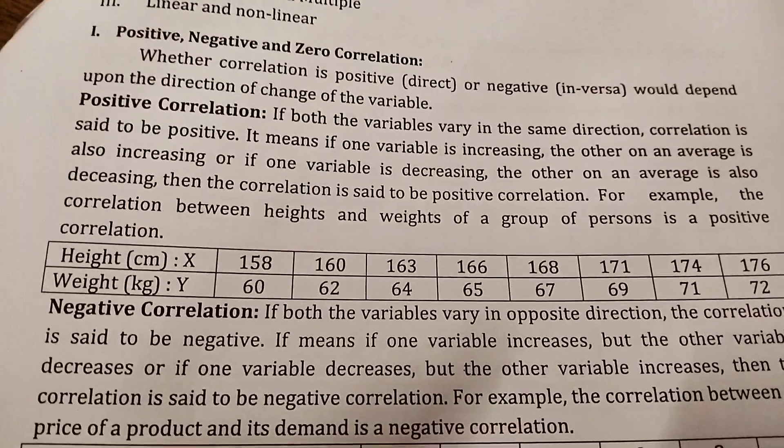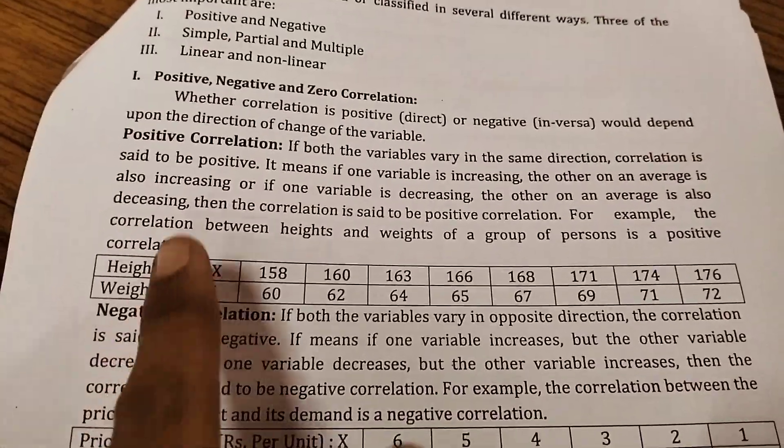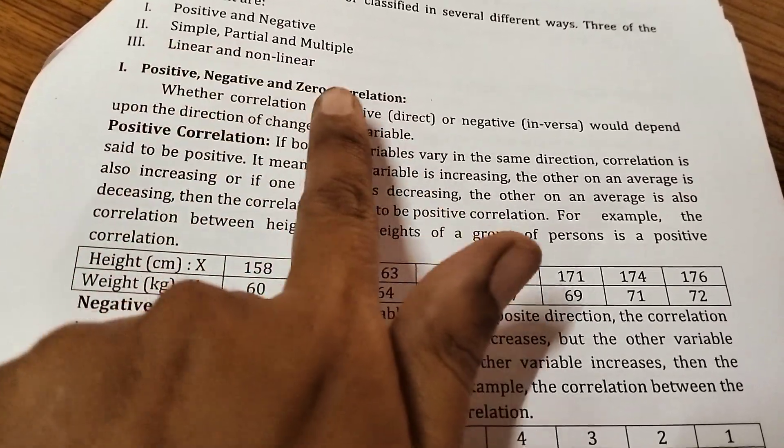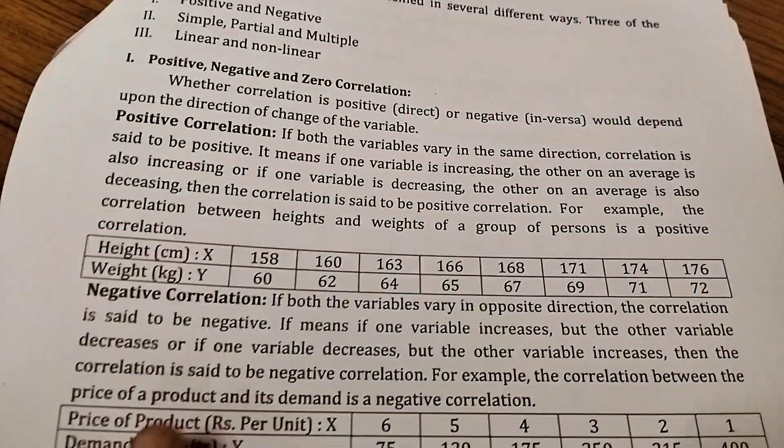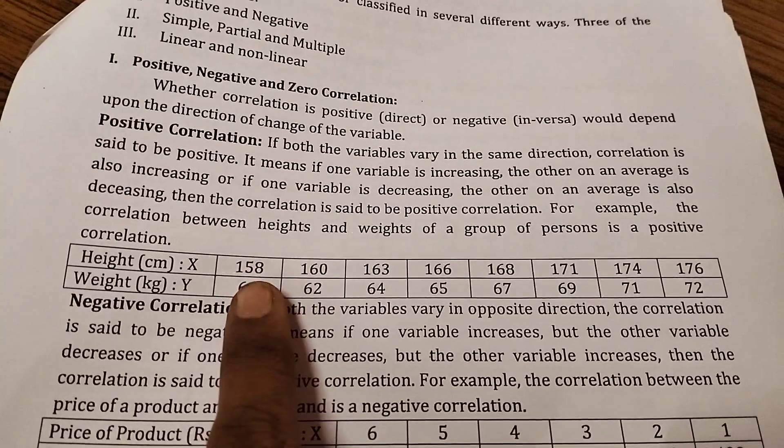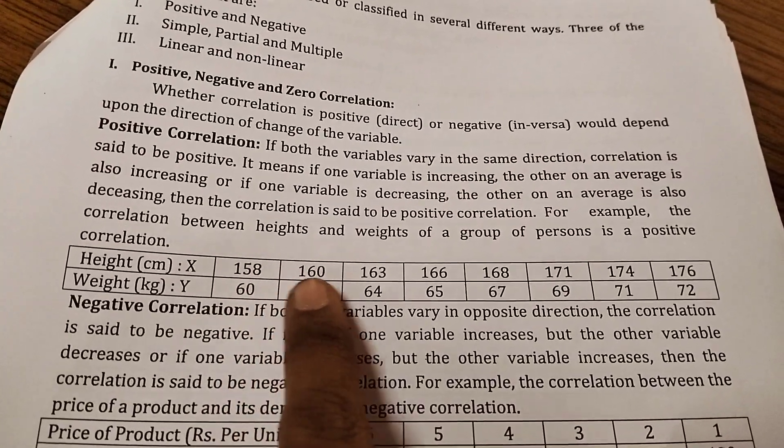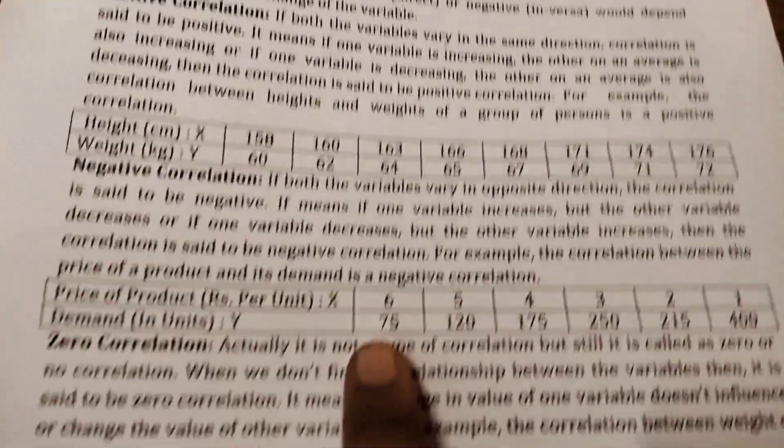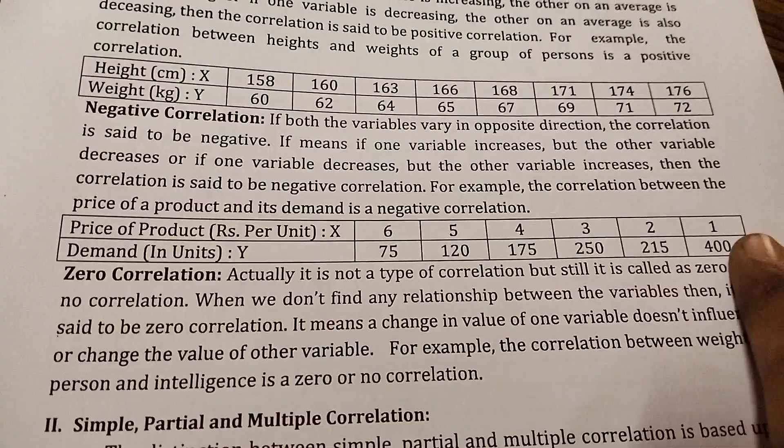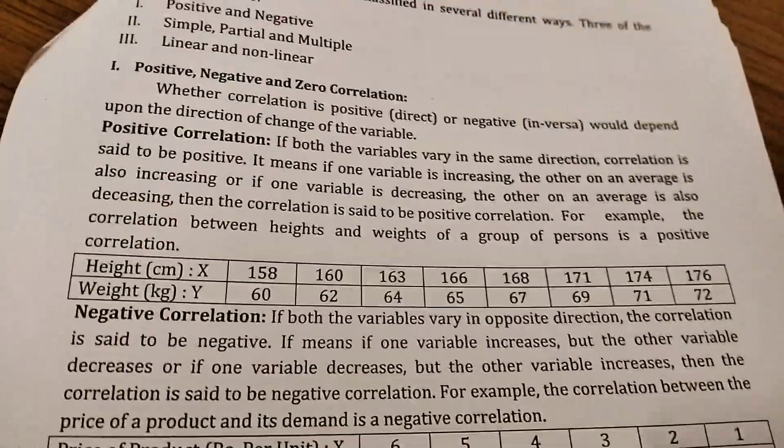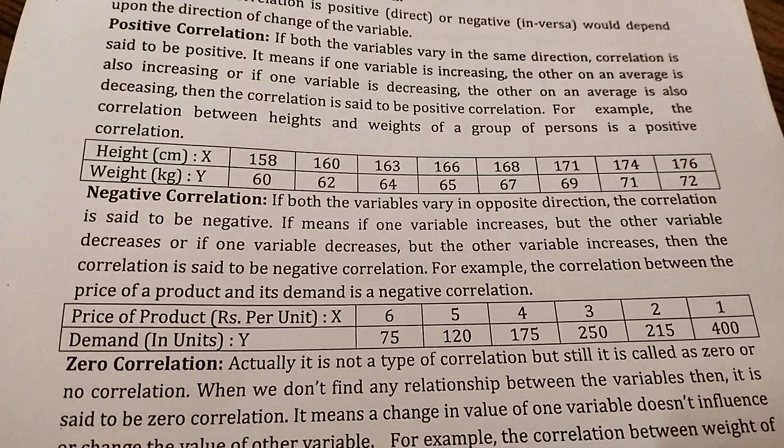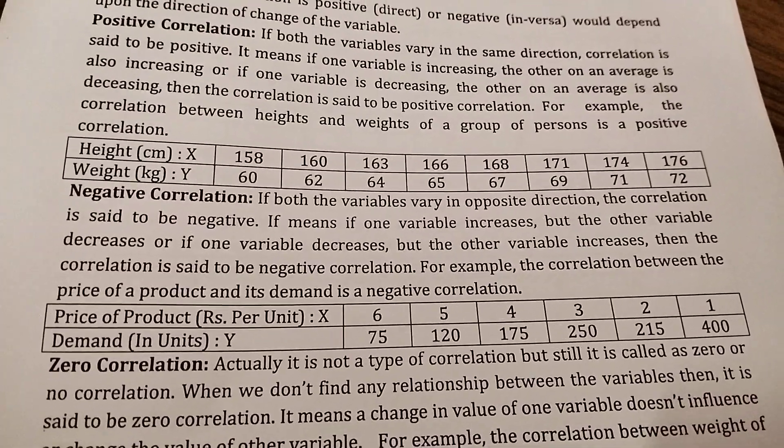In Karl Pearson correlation, the values can be positive or negative, simple or partial, multiple, linear or nonlinear. When the correlation values are in ascending or descending order, then you have to use the Karl Pearson coefficient method.